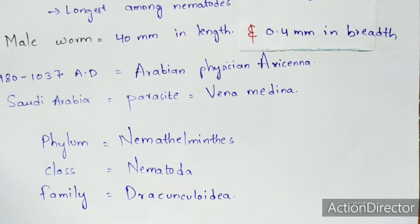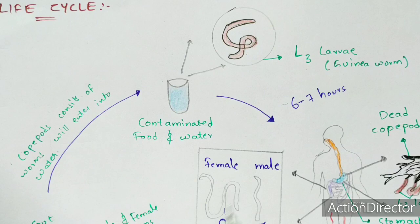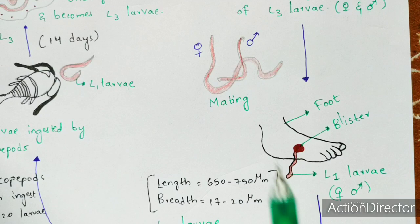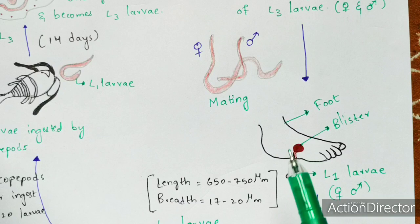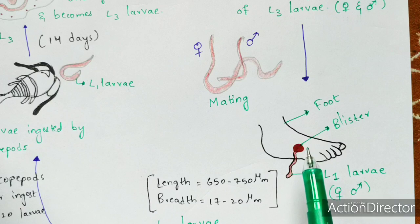Now let us learn about the life cycle of the Guinea worm. One important thing to note is that after the completion of the life cycle, it takes one year of time for symptoms to appear in an infected person. I will start the life cycle from the foot, because the main symptom appears in the foot region. Blisters are formed at the foot — blister being a red wound-like formation.